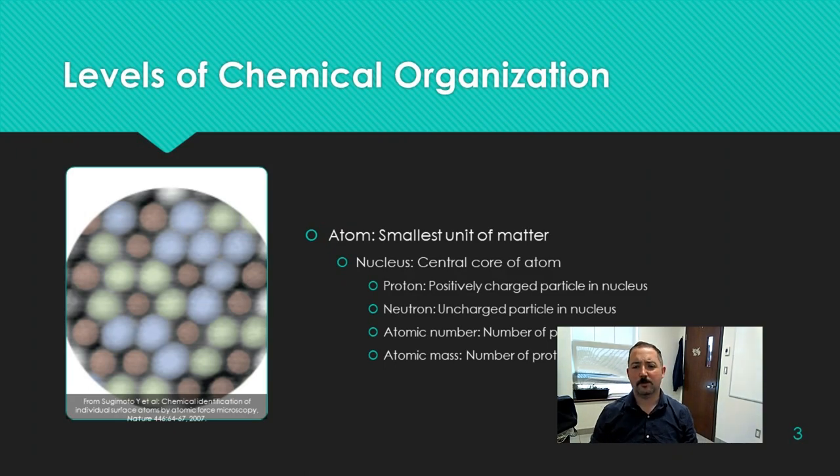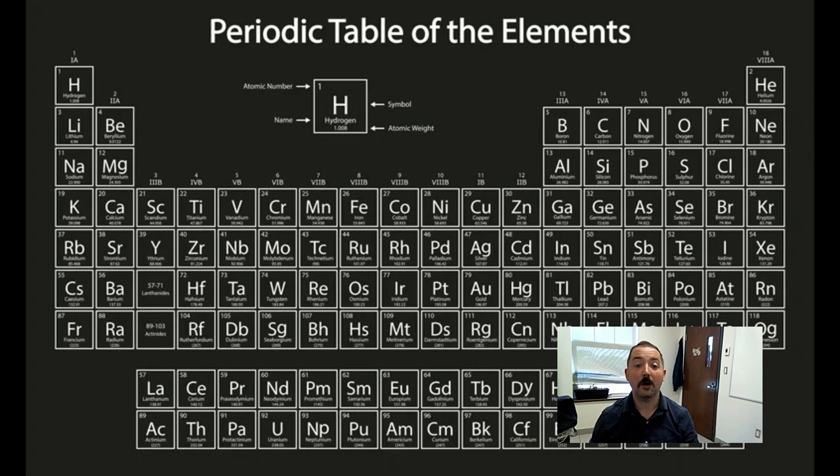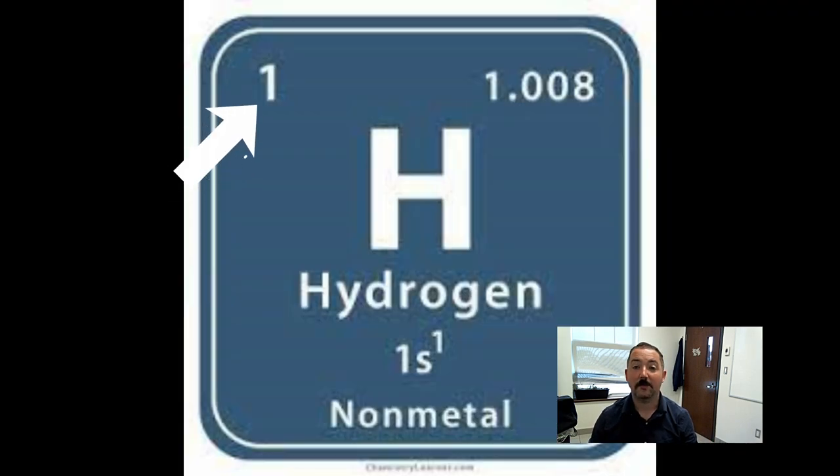If you've taken a chemistry course before, you've likely seen this table. This is the periodic table, and among other things, it can be a quick way to tell the number of protons an atom has inside its nucleus. Just look at this number right here. It's called the atomic number. Some tables will also have the atomic mass listed underneath, which would represent the number of protons and neutrons in the atom.